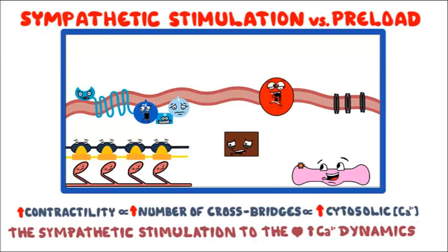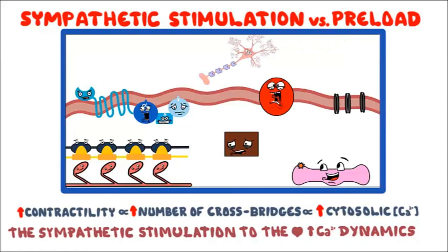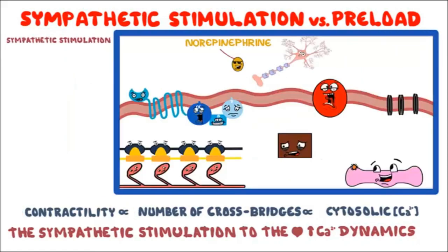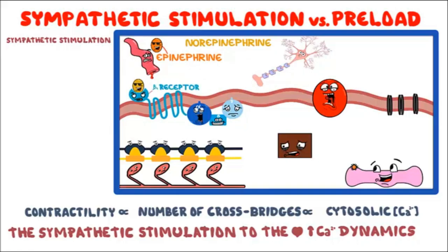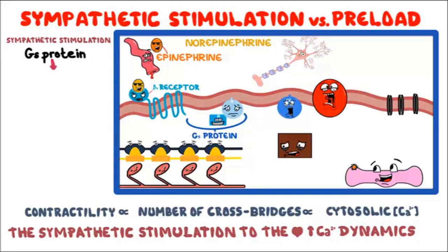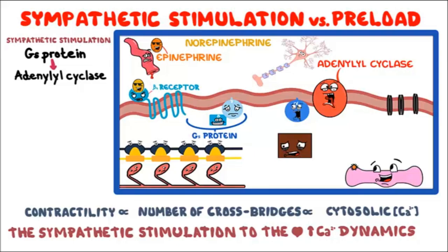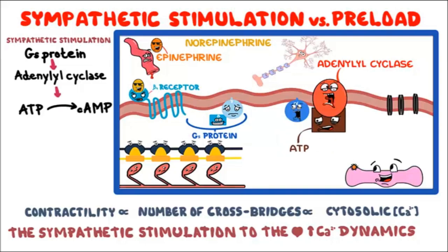Contractility is an extrinsically regulated factor and not an inherent property of the myocardium itself — it is under nervous control, mainly sympathetic. Norepinephrine released by the sympathetic nervous system, and circulating epinephrine and norepinephrine, stimulate beta-1 receptors in the myocardium. Beta-1 receptors are coupled with stimulatory G protein, so epinephrine and norepinephrine activate stimulatory G protein, which in turn activates adenylyl cyclase, leading to production of cyclic AMP from ATP.